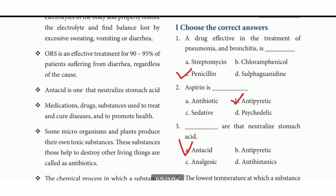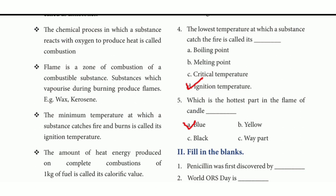Third question: substances that neutralize stomach acid. The answer is option A, antacid. Fourth question: the lowest temperature at which a substance catches fire is called what? The answer is option D, ignition temperature. Fifth one: which is the hottest part in the flame of a candle? The answer is option A, blue.